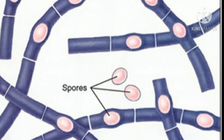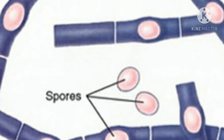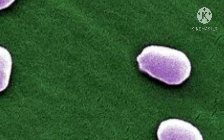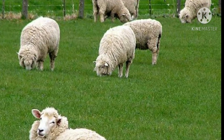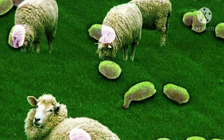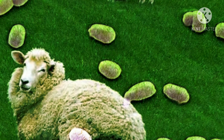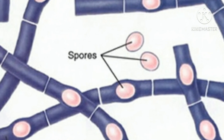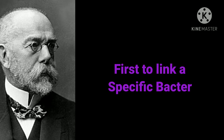Robert Koch hypothesized that these were spores. He demonstrated that these spores, in the absence of bacteria, could cause anthrax. Their formation explained how contaminated soil could remain toxic for years. Having discovered the importance of spores in the pathogenesis of disease, Robert Koch recommended that diseased animals be burnt or buried in soil to prevent spore formation. Robert Koch became the first to link a specific bacterium with a specific disease.